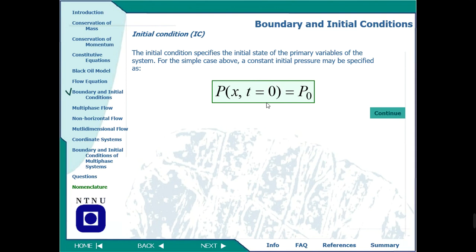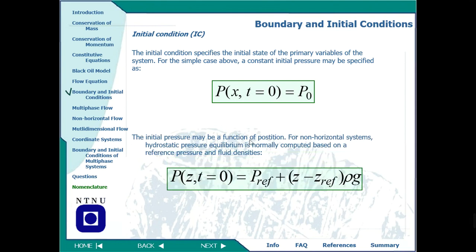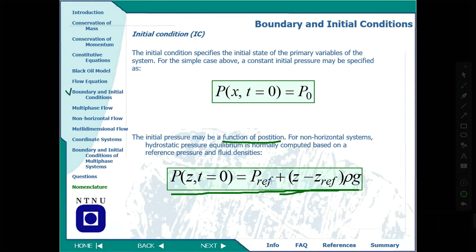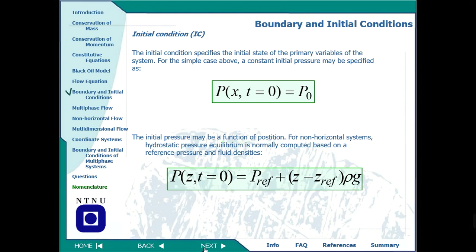For initial conditions, at time equal to zero the pressure is the original reservoir pressure. This initial pressure depends upon position and is a function of position. The equation used finds pressure with respect to position, where z is the thickness direction of the reservoir measured from a reference point. These are the conditions for finding pressure at a certain point for non-horizontal systems.